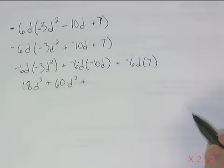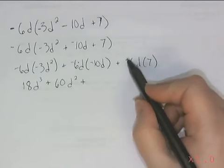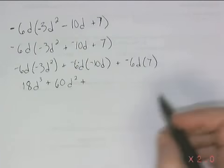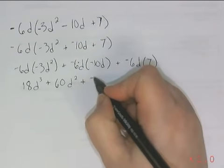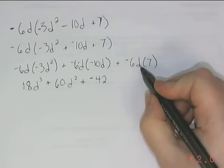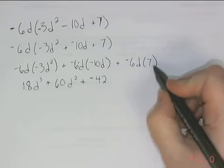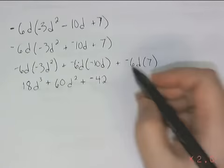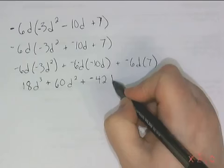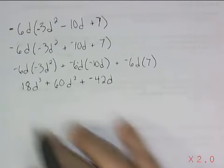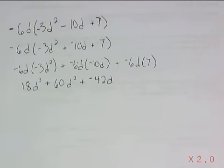I know it's going to be an addition sign. Negative times a negative is a positive — 6 times 10 is 60. d times d is d squared. Write my addition sign down. Negative 6 multiplied by positive 7 is negative 42. Since this term has a d, I still have a d in my final term.